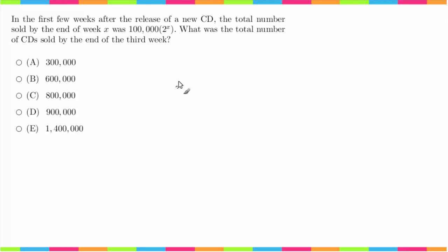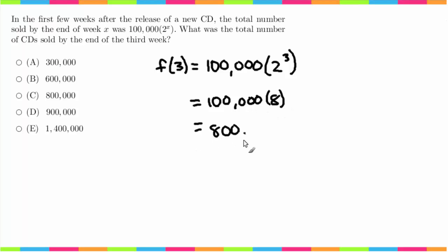Plugging that in, I'm just going to write it in function notation. f(3) is equal to 100,000 times 2 to the third power. Now remember, this does not mean to multiply these numbers. This 3 tells us to multiply this number by itself that many times. So 2 times 2 times 2 is 8, so this equals 100,000 times 8, which equals 800,000.